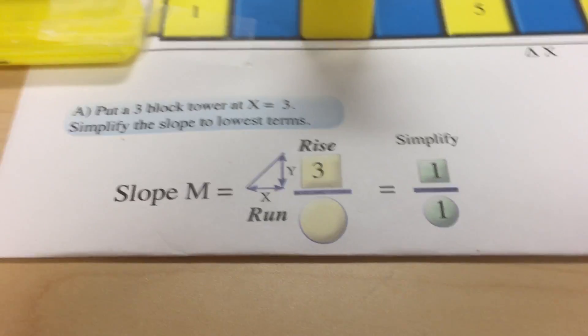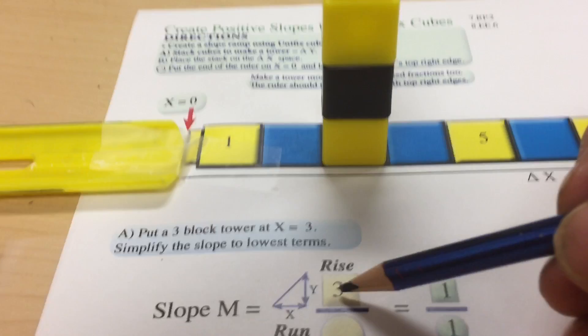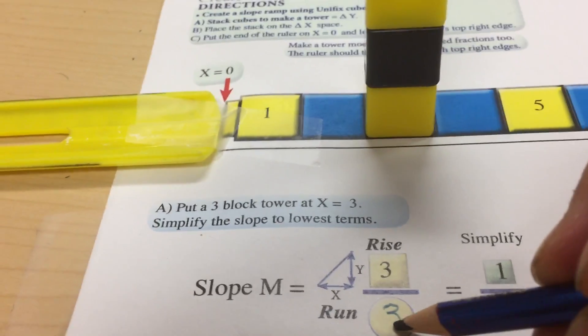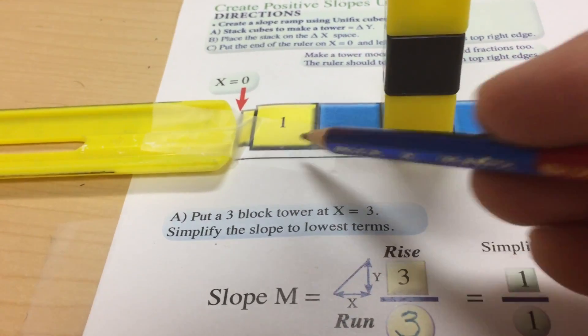Slope is the comparison between rise and run. So our tower has a rise of three and it's located three steps to the right of x equals zero. That's the run.